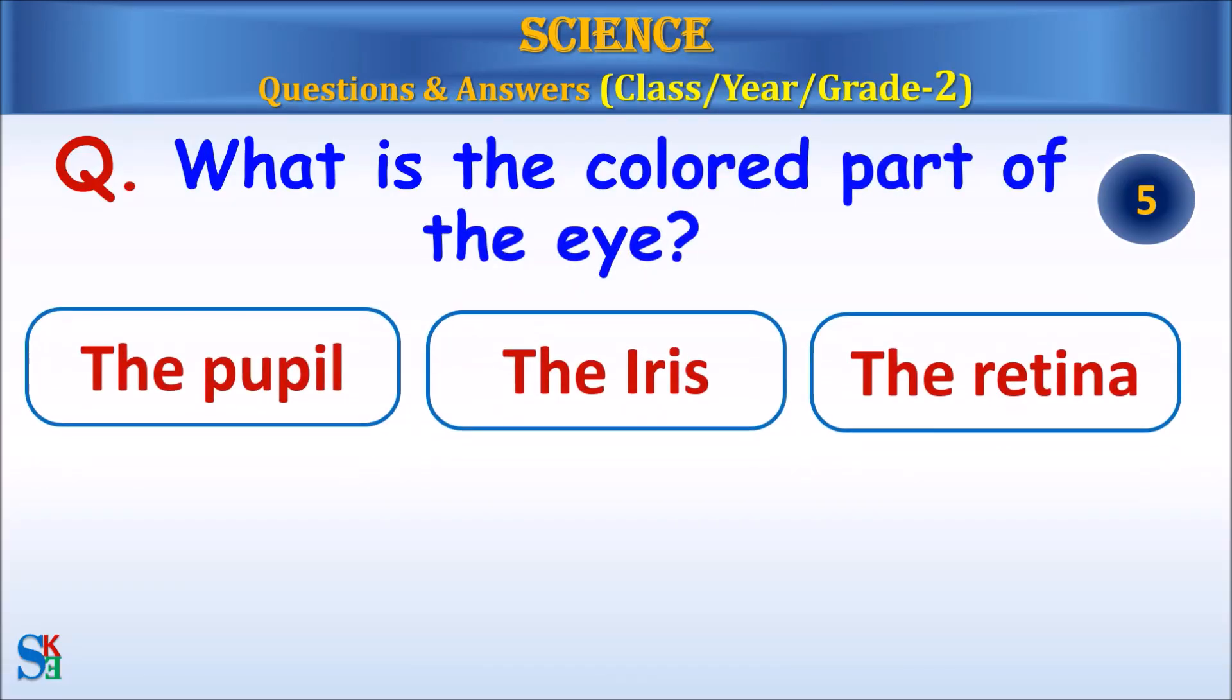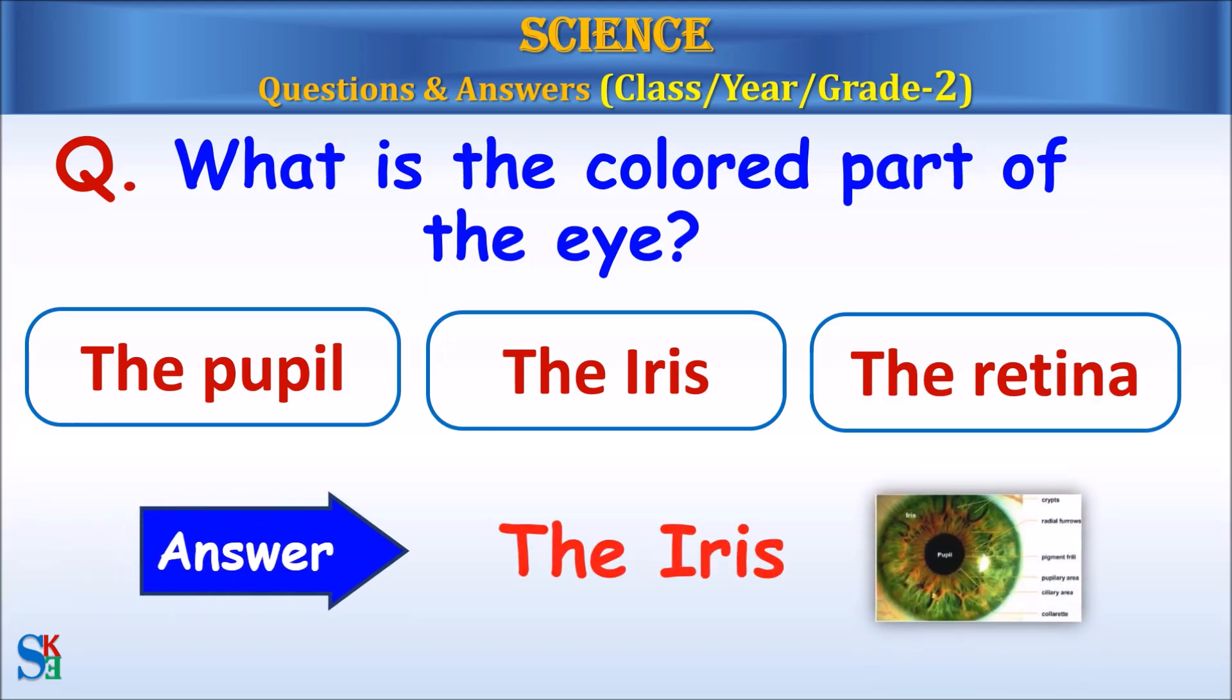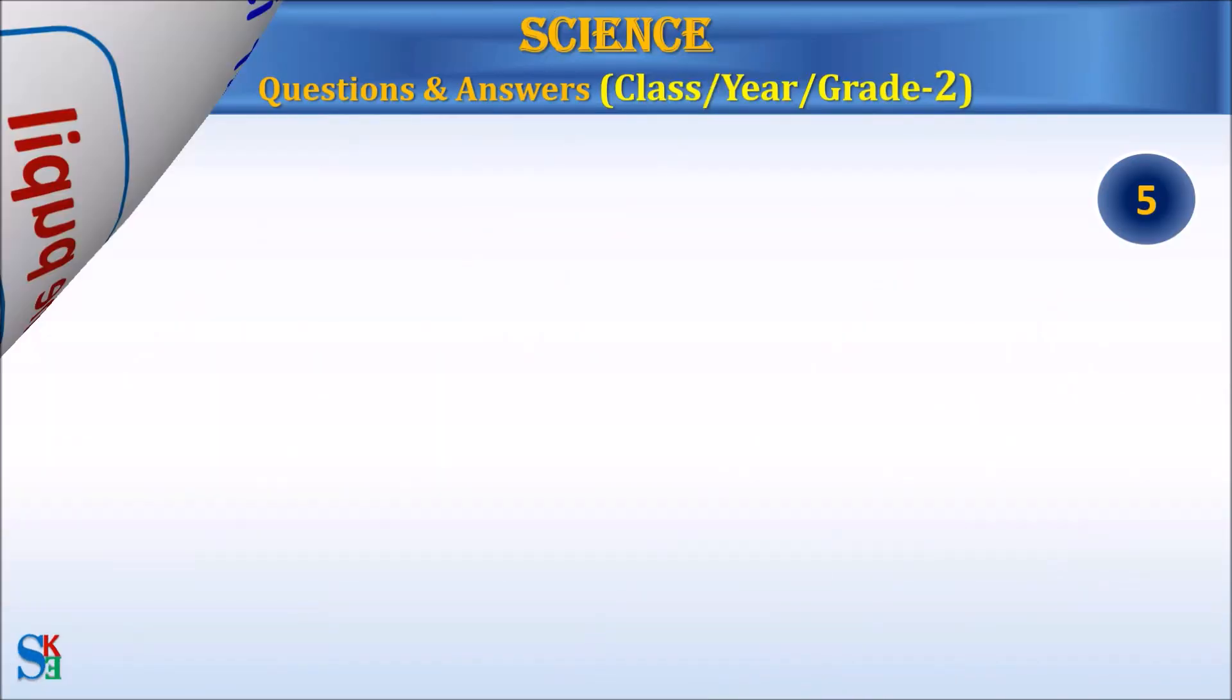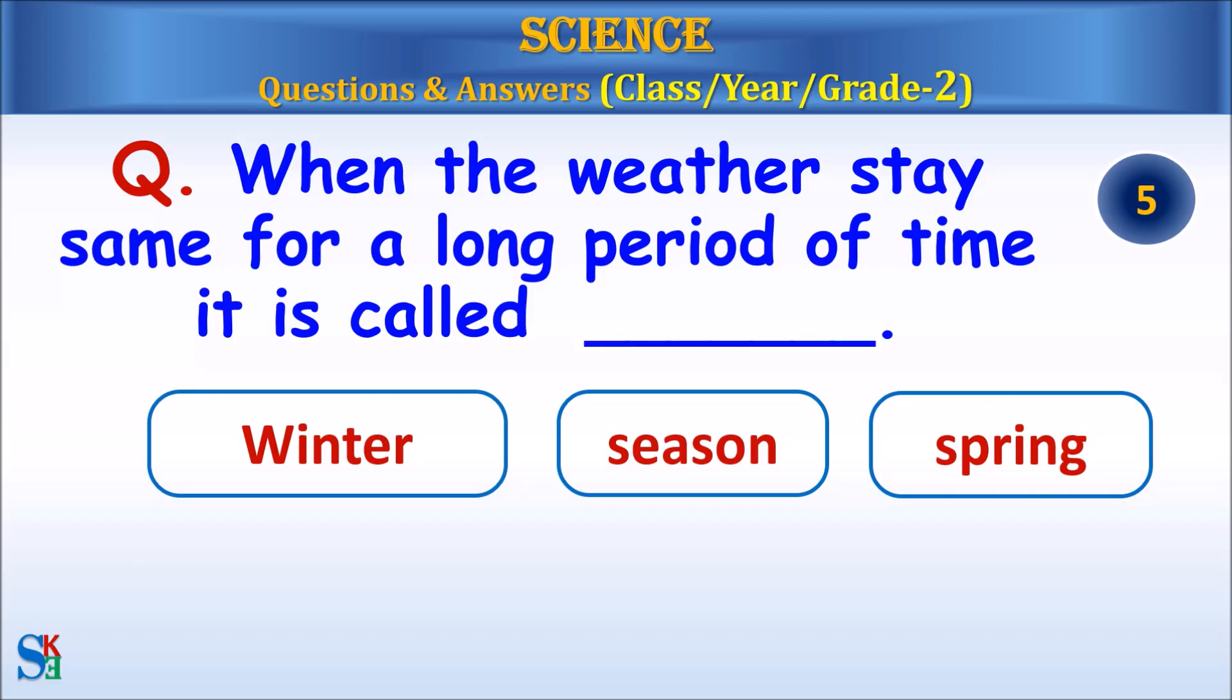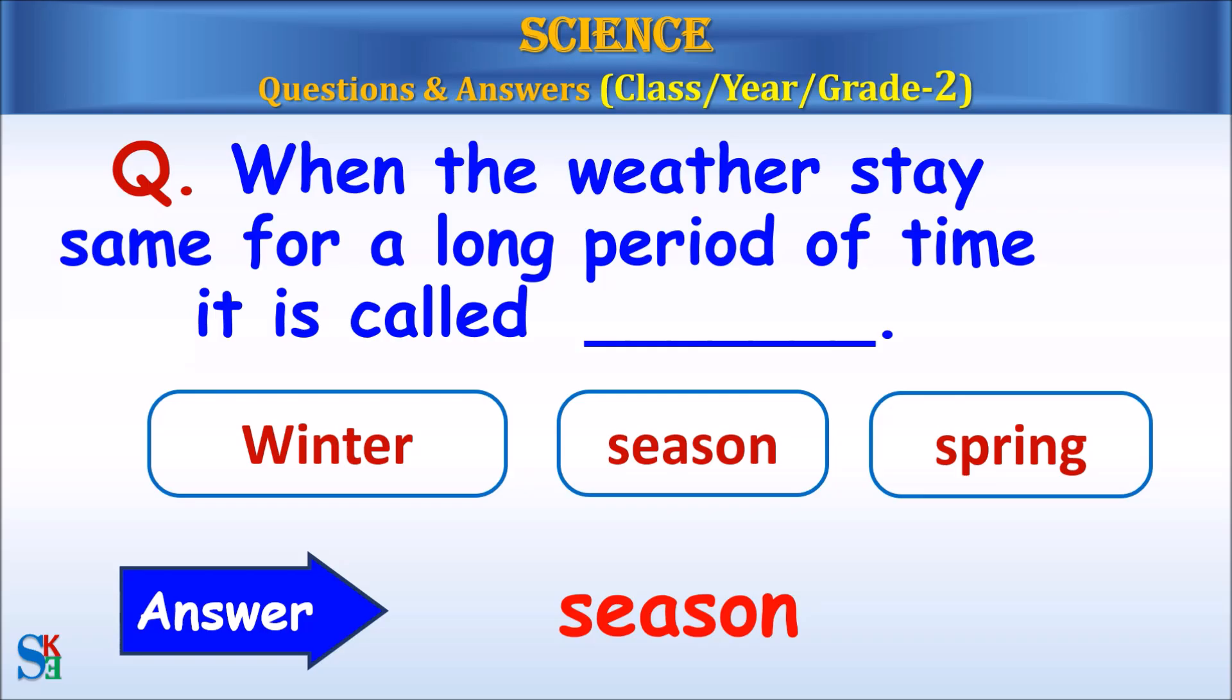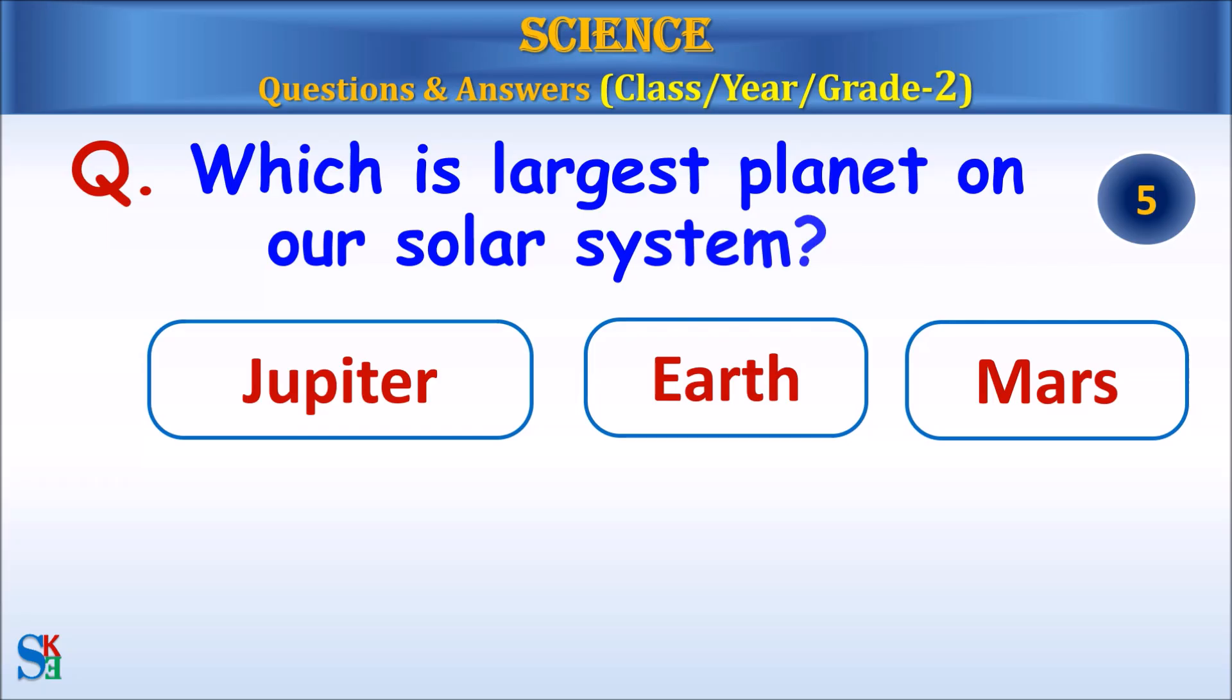What is the colored part of the eye, the pupil, the iris or the retina? Answer, the iris. When the weather stays same for a long period of time, it is called winter, season or spring. Answer, season. Which is largest planet on our solar system, either earth or mars? Answer, Jupiter.